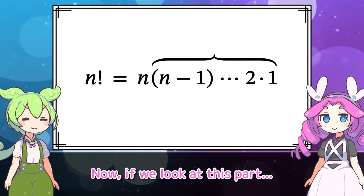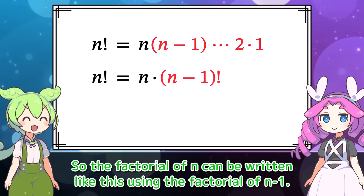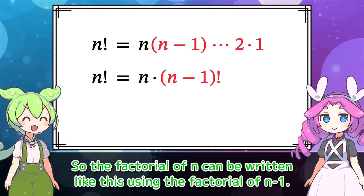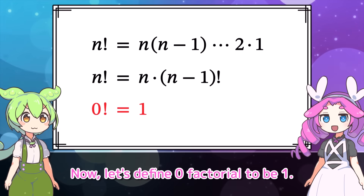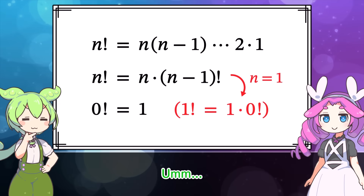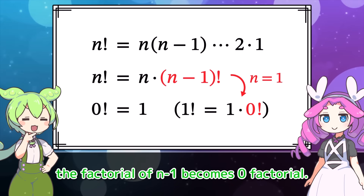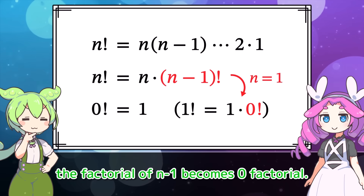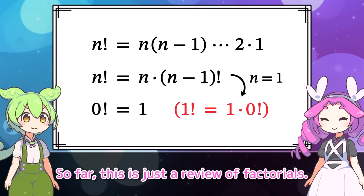If we look at this part, it is actually the factorial of n minus 1. So the factorial of n can be written using the factorial of n minus 1 — that is an important property of a factorial. Now, let's define 0 factorial to be 1. Then this equation will also hold true when n equals 1, because the factorial of n minus 1 becomes 0 factorial, and the equation really works out. So far, this is just a review of factorials.